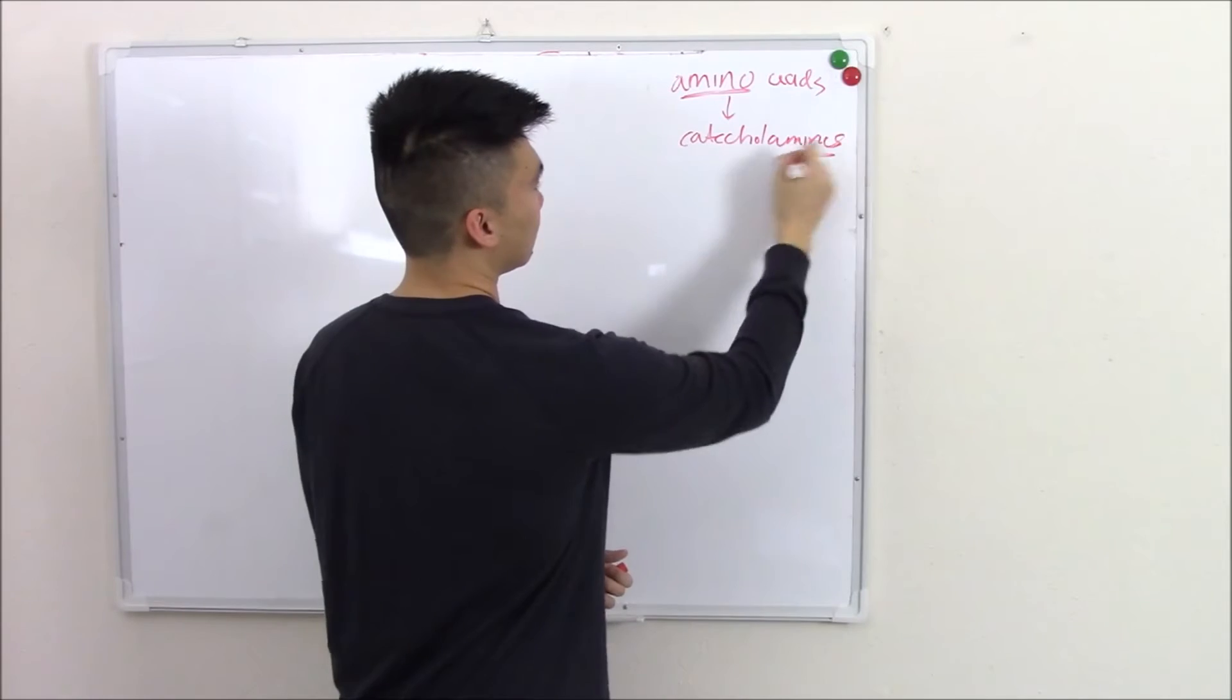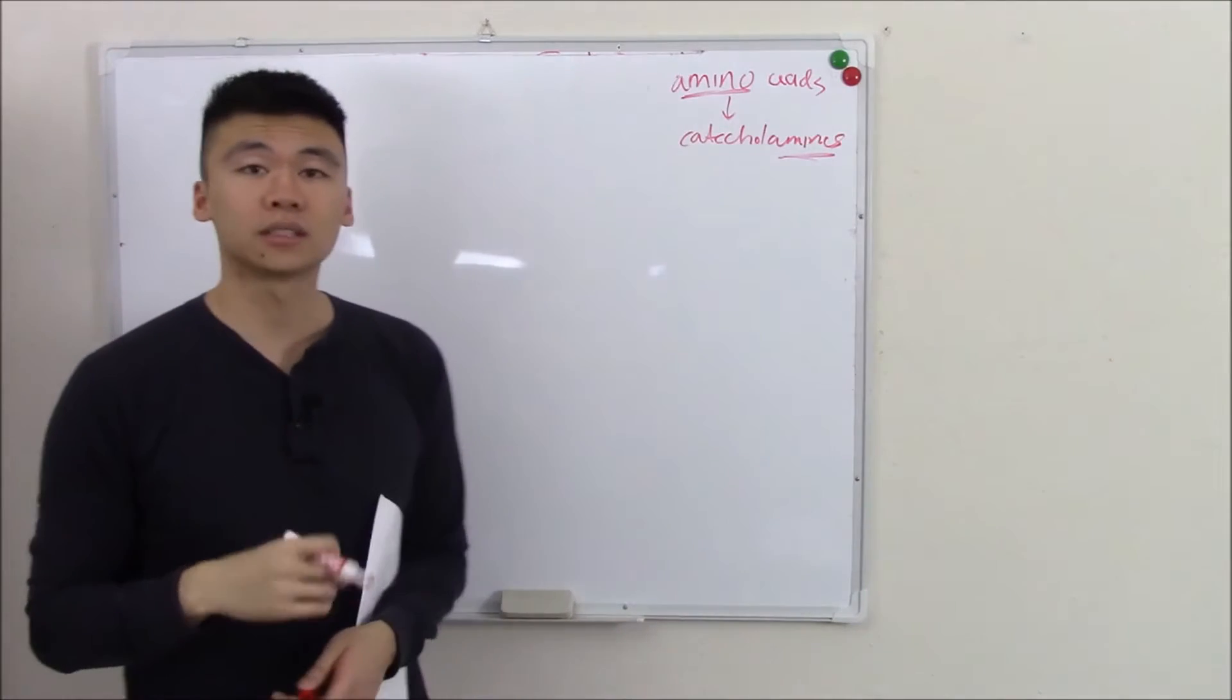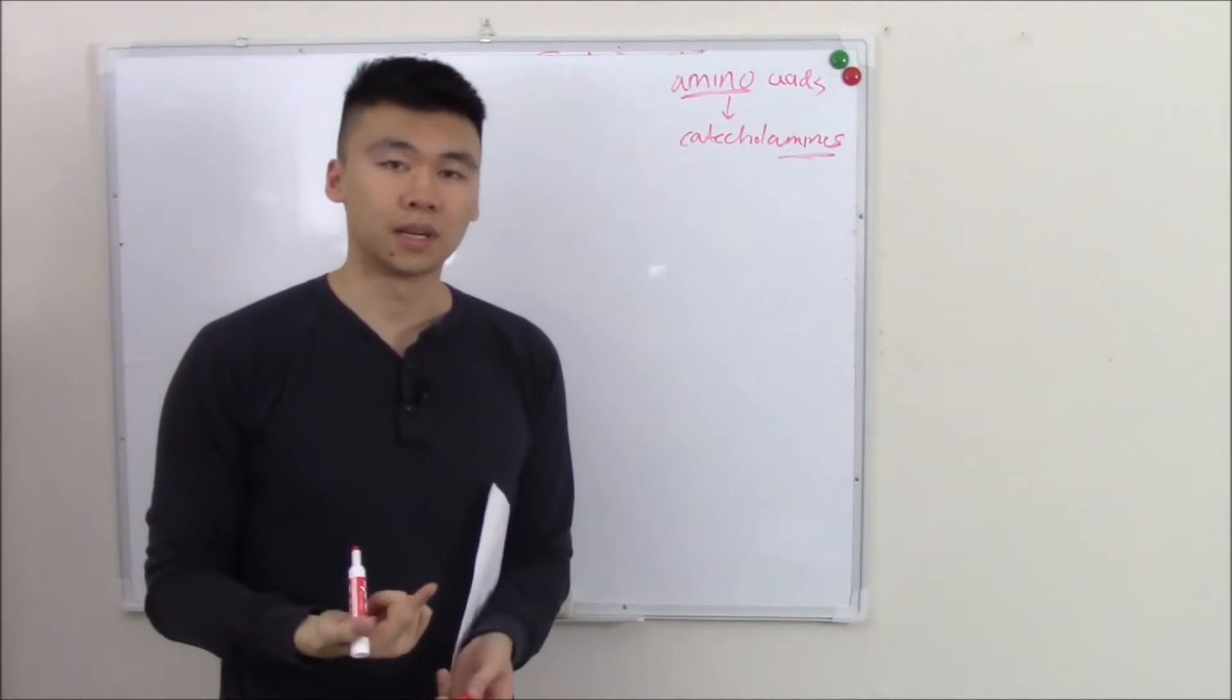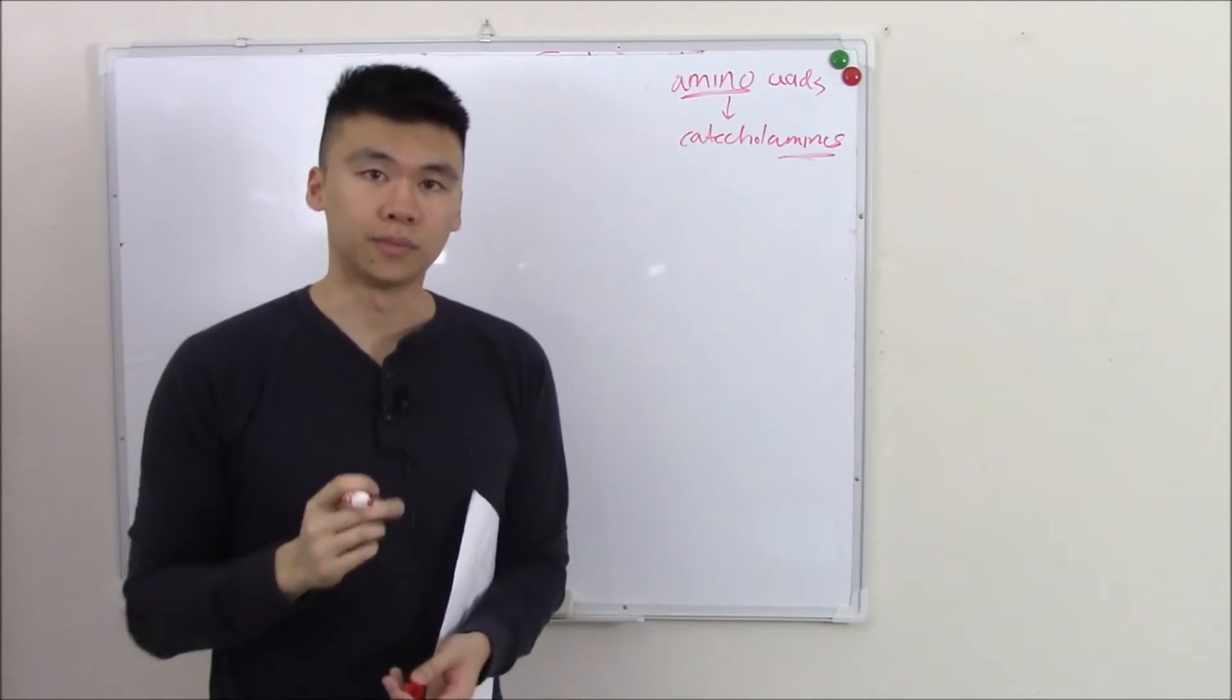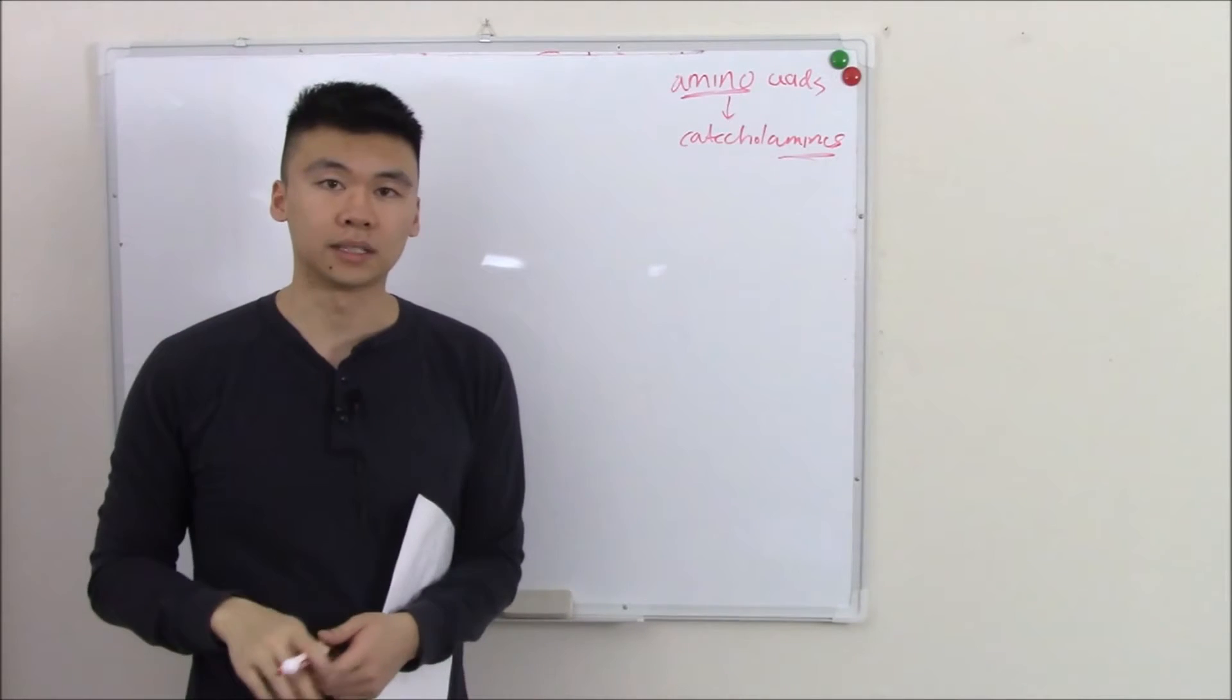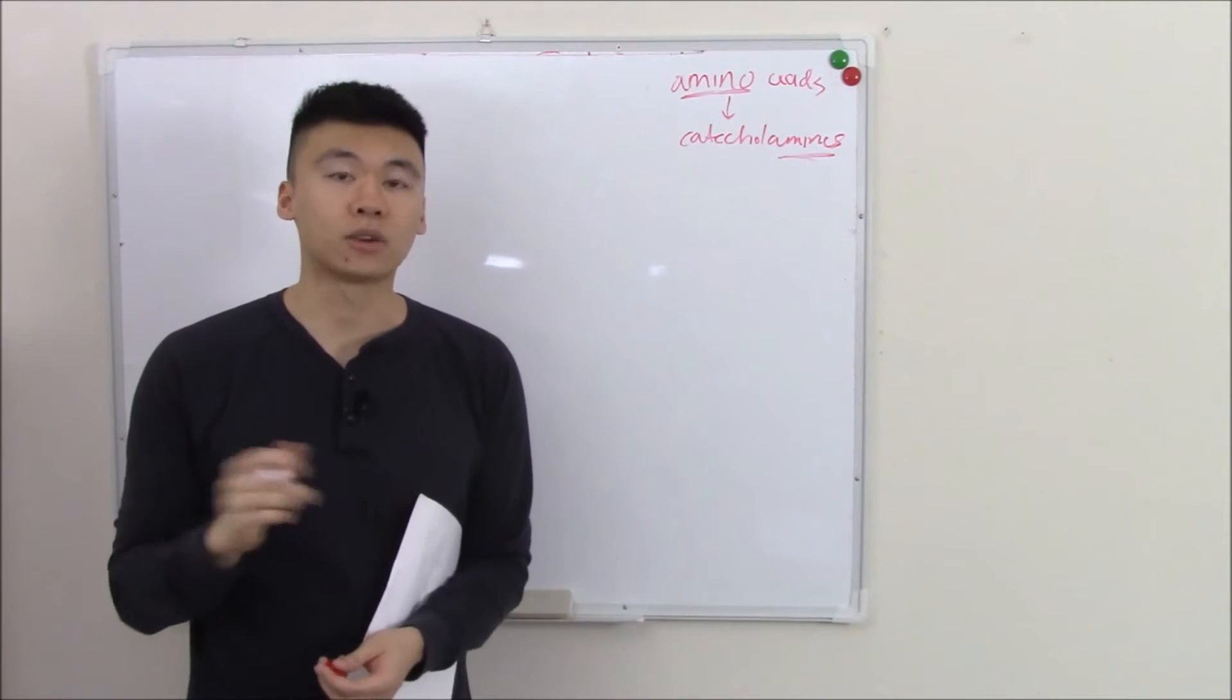Catecholamines are very important neurotransmitters. These include norepinephrine. These include dopamine. So we'll start with the big picture, look at how they create catecholamines, and then we're going to look at little side reactions that go on.